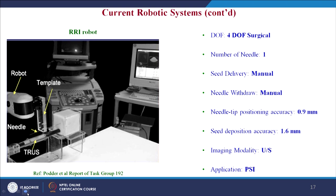The Robarts Research Institute (RRI), London, Ontario, Canada has developed a 4-degrees-of-freedom robotic system. The system supports the needle guide from the underside by two hinged parallelograms spaced such that their fixed points of rotation are mounted onto a common shaft. Needle tip positioning accuracy is 0.9 mm, seed deposition accuracy is 1.6 mm, and it involves a single needle.